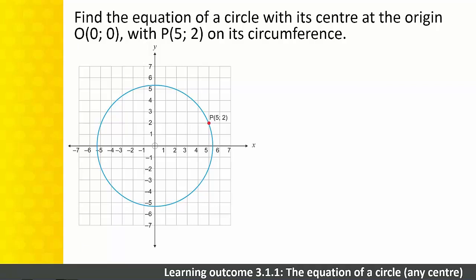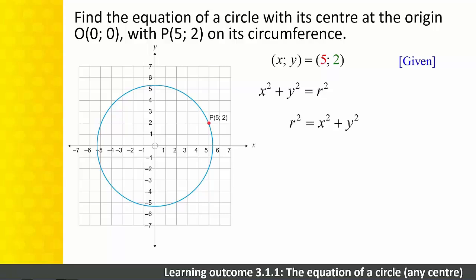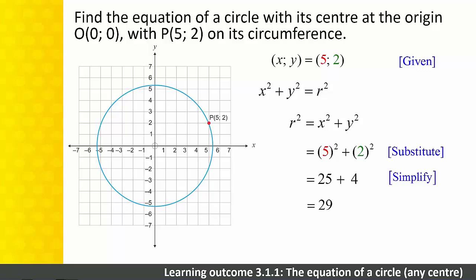Let's work through the solution. The question was: find the equation of a circle with its centre at the origin, with the point P(5, 2) on its circumference. We know that x² + y² = r². Rearranging to find r²: substituting the point gives r² = 5² + 2² = 25 + 4 = 29. So the equation of the circle is x² + y² = 29.